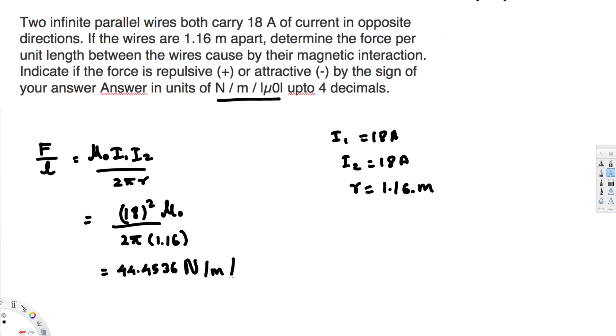Remember there's mu naught there. So the final unit is Newton per meter per mu naught. You can also write it as Newton times mu naught per meter, because per meter per mu naught is basically multiplication.